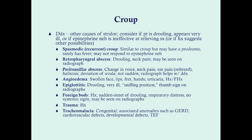A foreign body usually has a history, though parents may not observe the child inhaling a toy. It presents with sudden onset and can cause drooling and respiratory distress similar to epiglottitis. The differentiator is that children with a foreign body have no systemic signs — no fever — just a mechanical obstruction simulating a swollen epiglottis. This is easily seen on radiographs. Trauma can also cause stridor and is differentiated by history. Tracheomalacia is a congenital issue associated with gastric reflux disease, cardiovascular defects, developmental defects, and tracheoesophageal fistula.